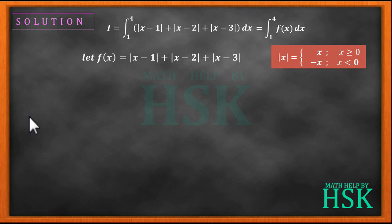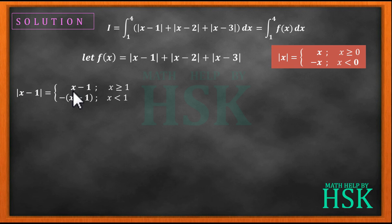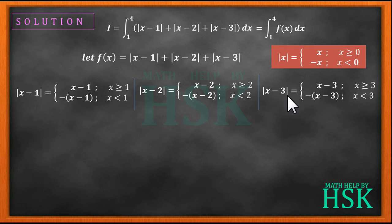Applying the same definition, modulus of x minus 1 equals x minus 1 if x is greater than or equal to 1, and equals minus of x minus 1 if x is less than 1. Using the same definition, we can write modulus of x minus 2 and modulus of x minus 3 similarly — this is how we simplify the modulus signs.